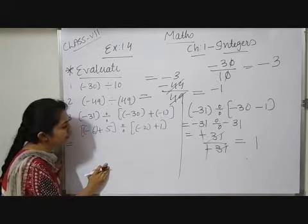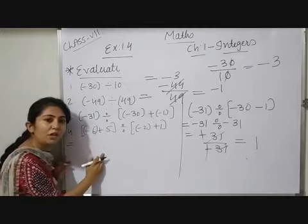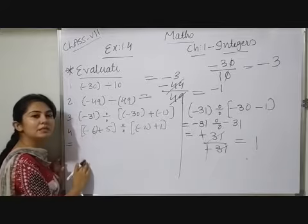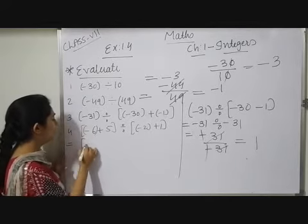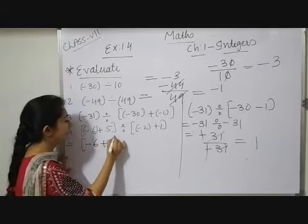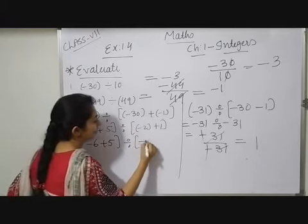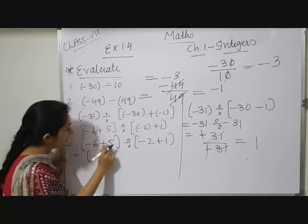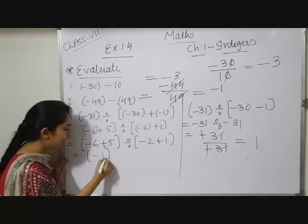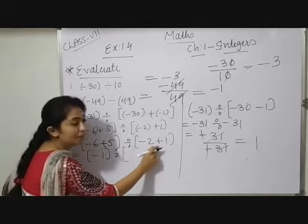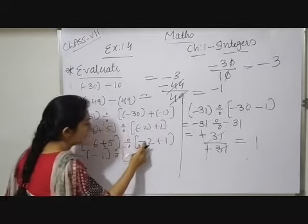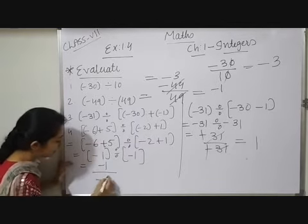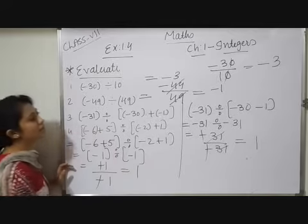The fourth question: whenever division, multiplication, addition, or subtraction is given with brackets, first solve the bracket, then open it and simplify further. Here, minus 6 plus 5 divided by (minus 2 minus 1): solving the bracket gives minus 1 divided by minus 3. Opening the bracket, minus 1 divided by minus 1 — minus÷minus cancels and the answer is 1.